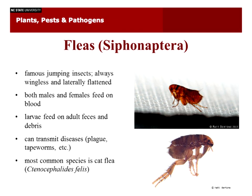Fleas are a group very closely related to flies. They are very famous jumping insects — the basis of flea circuses. They're always wingless, always laterally flattened, with very tiny eyes and a few combs of setae on parts of their body. They're usually an amber-red color and very tough insects. Both males and females feed on blood. The larvae are legless and worm-like, living in cracks of floors or in nests, and feed on adult feces and debris like skin and hair.